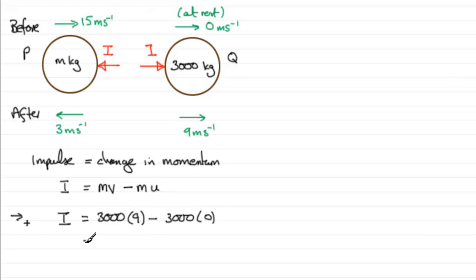And if we work this out, you then end up with 3000 times nine, which is 27,000. So the units of that impulse would be Newton seconds. So there's our impulse I, acting on Q. So there you go, I hope that's given you some idea how you could go about that.